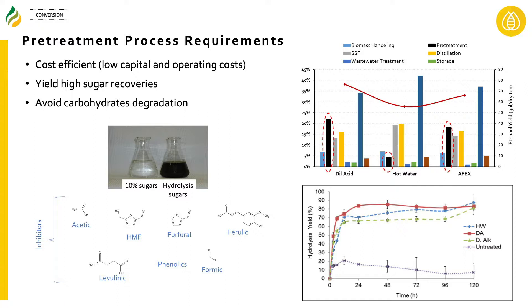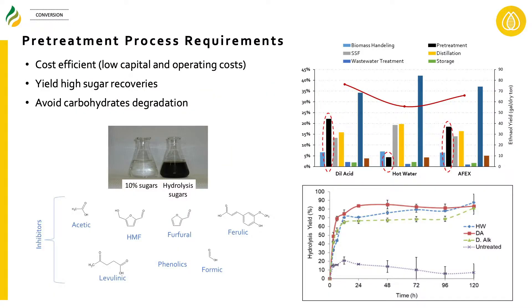When we talk about pretreatment, there are three major things to focus on. Number one is reducing capital and operating costs — for example, hot water pretreatment has lower capital costs but also lower ethanol yield, so it must be combined with other technologies. Second, you want very good sugar recoveries after pretreatment. Third, you want to minimize production of inhibitors such as acetic acids, furfurals, hydroxymethylfurfural, and other aromatic compounds.